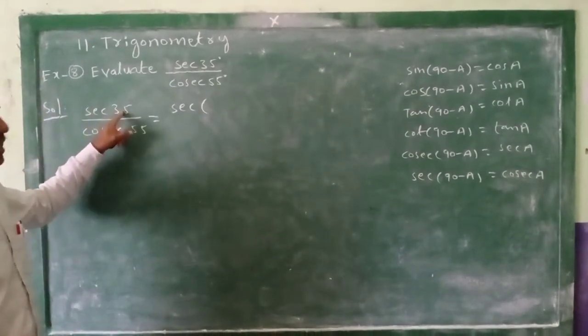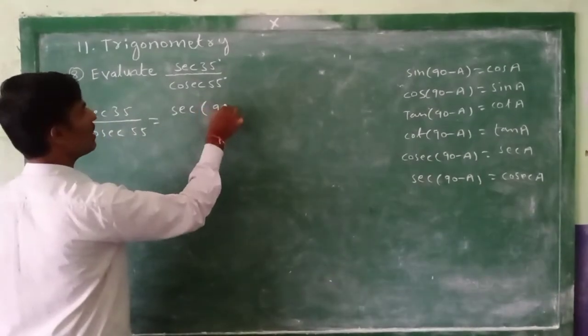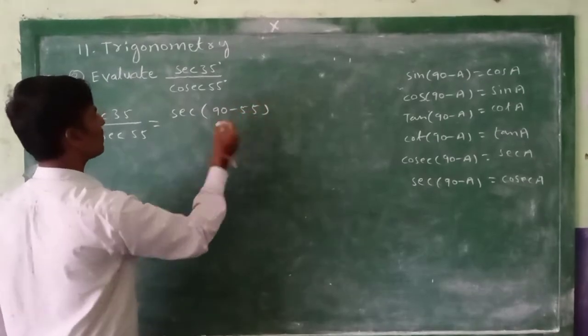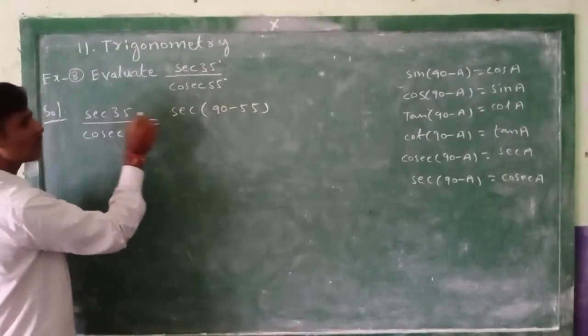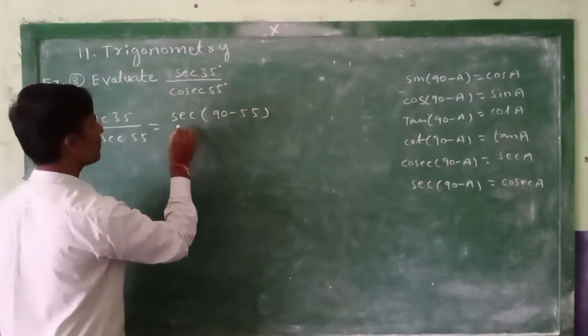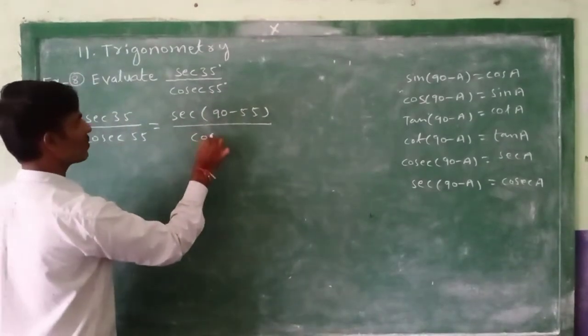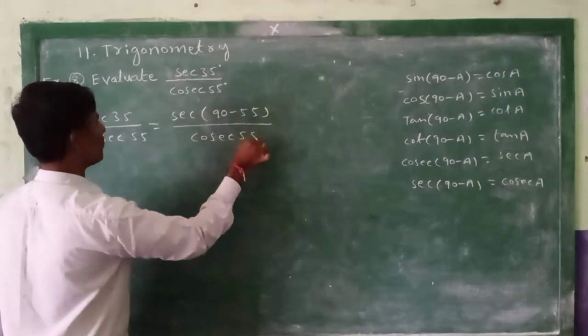Secant 35 is equal to secant(90-55). 90 minus 55 means you are getting 35. So I am writing sec(90-55) divided by cosec 55.